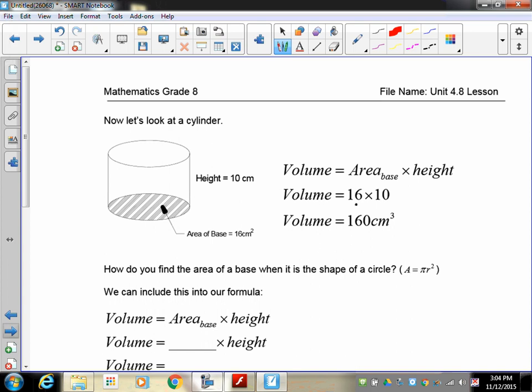The area of the base being 16 multiplied by 10, so the area of this, or the volume of this particular cylinder is 160 centimeters cubed. I think I said area in the previous one with the rectangular, I was talking about the volume.